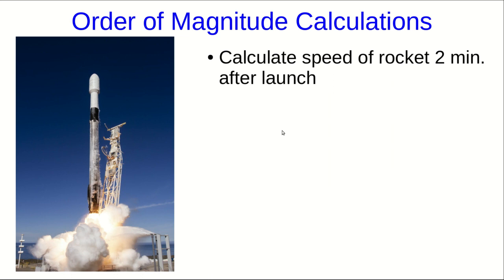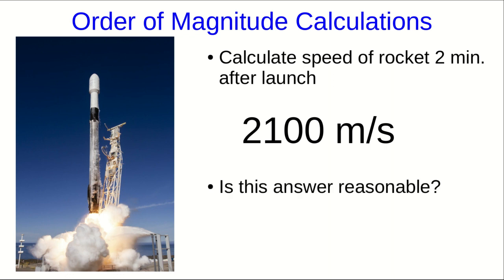Another reason we often do order of magnitude calculations is to check the answers to more complicated calculations. Suppose you wanted to calculate the speed of a rocket two minutes after launch. That's going to be a complicated calculation. It's going to involve a bunch of calculus. You might actually be better off writing a computer program to simulate it. And let's suppose you come up with 2,100 meters per second. No, that's 2.1 kilometers per second. Well, is this answer reasonable? Because there are lots of errors you could have made in the very complicated calculation that could give you an extremely wrong answer. And by extremely wrong, I mean not even the right order of magnitude. And so it would be useful to do a simple order of magnitude calculation that at least gives you an idea roughly of how big the answer ought to be.